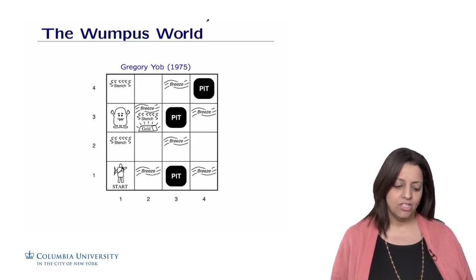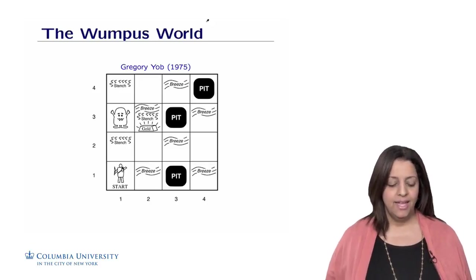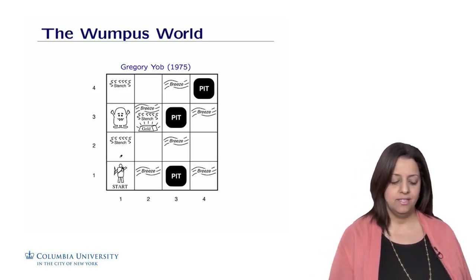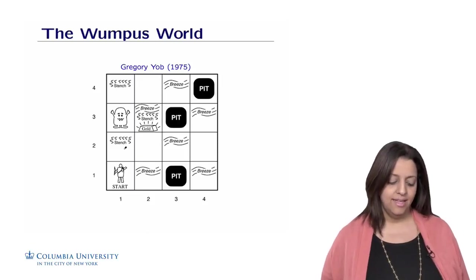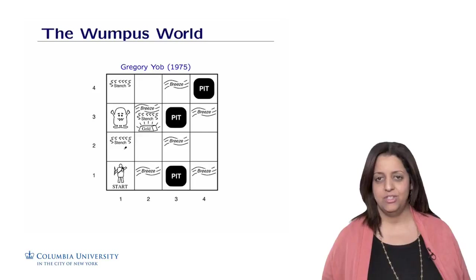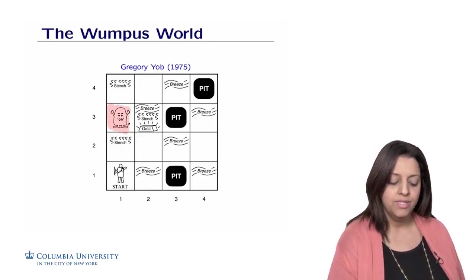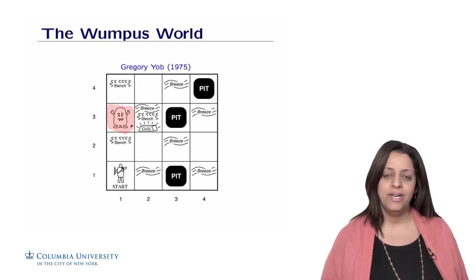The Wumpus World is actually a cave of four by four rooms. We have 16 rooms that are interconnected, and we have an agent that evolves in this environment. These rooms actually have some danger. This agent can be either a beast called the Wumpus that would eat anybody who gets into the room.